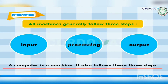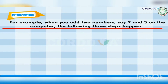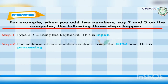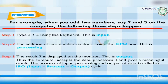A computer is a machine. It also follows these three steps. For example, when you add two numbers, say 2 and 5, on the computer, the following three steps happen. Step 1: Type 2 plus 5 using the keyboard — this is input. Step 2: The addition of two numbers is done inside the CPU box — this is processing. Step 3: The result 7 is displayed on the monitor.